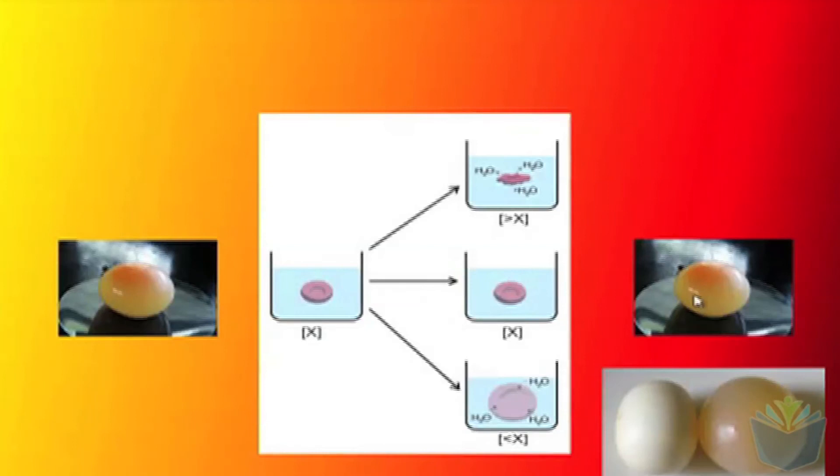If we were to place the egg into a sugar solution, what we'd expect to see is the net flow of water move out of the cell. So water would actually leave the cell and therefore the cell would start to shrink.